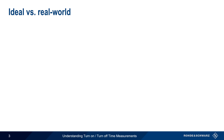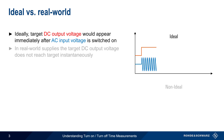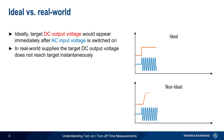Let's start by talking about ideal versus real-world power supplies. In an ideal AC-DC power supply, the target DC output voltage would appear immediately after AC is switched on. In real-world supplies, however, the target DC output voltage does not occur immediately or instantaneously. There are numerous reasons for this, including the time required for capacitors to charge, soft start functions, etc.